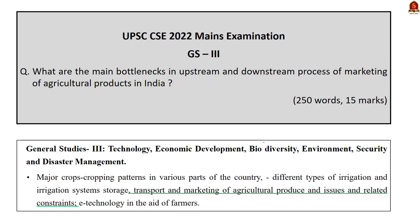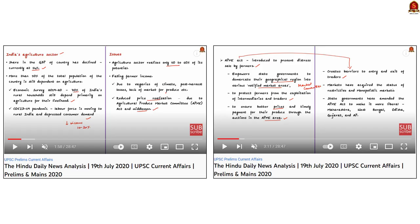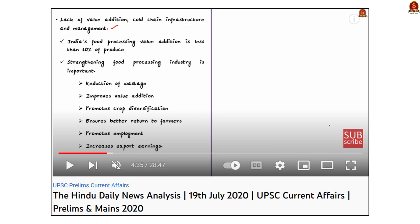Question number 13 in GS Paper 3: 'What are the main bottlenecks in the upstream and downstream process of marketing of agricultural products in India?' We covered the issues surrounding agriculture in general and agricultural marketing in particular in our 19th July 2020 Hindu News Analysis, including how to address those issues. Using this, you can arrive at a decent answer for this question.